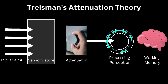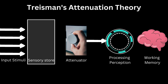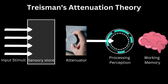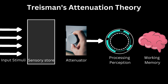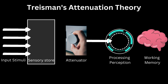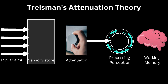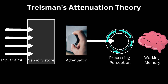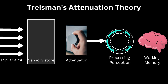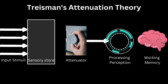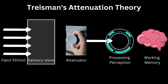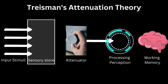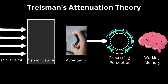This theory states that we do not have a selective filter, but rather an attenuator which attenuates or tones down all the other stimuli that are irrelevant, without completely eliminating them.